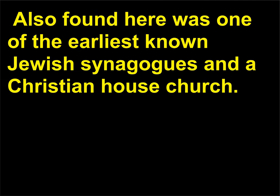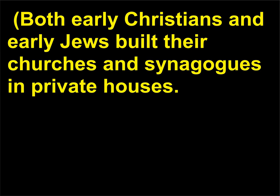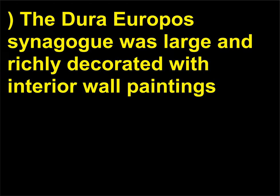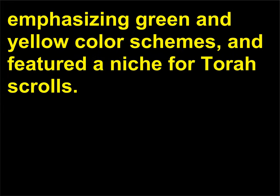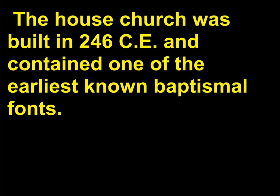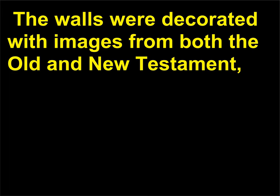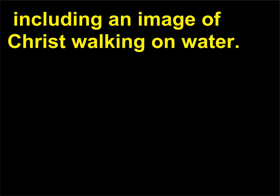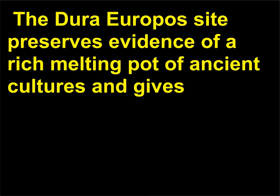Also found here was one of the earliest known Jewish synagogues and a Christian house church. Both early Christians and early Jews built their churches and synagogues in private houses. The Dura-Europos synagogue was large and richly decorated with interior wall paintings emphasizing green and yellow color schemes, and featured a niche for Torah scrolls. The house church, built in 246 CE, contained one of the earliest known baptismal fonts, and its walls were decorated with images from both the Old and New Testament, including an image of Christ walking on water. The Dura-Europos site preserves evidence of a rich melting pot of ancient cultures.